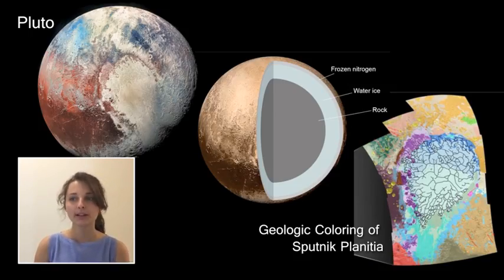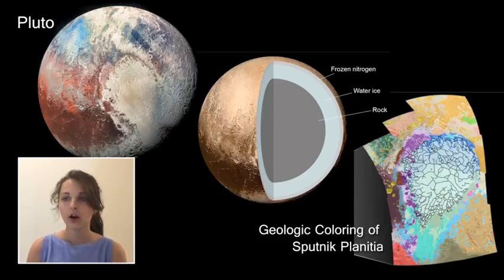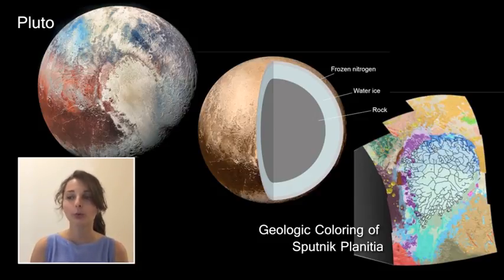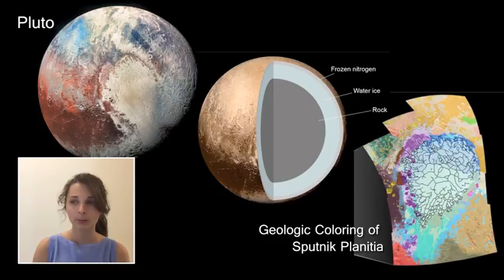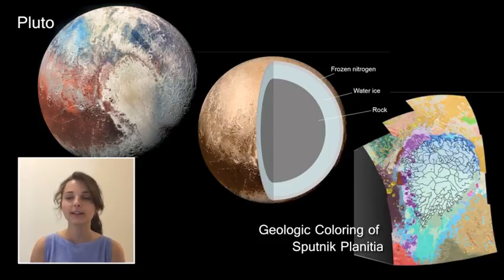Pluto is the dwarf planet that was classified as a planet until 2006, when the IAU changed its classification because one of the requirements to be a planet is that the object must have cleared its orbit of all objects of non-negligible mass. Pluto is the first dwarf planet discovered and its existence was actually predicted in the 19th century by Newtonian mechanics based on perturbations in Neptune's orbit. Pluto is in a 2:3 orbital resonance with Neptune and is tilted 120 degrees relative to its orbital plane, so it experiences extreme seasons — one quarter of Pluto is always in shade and one quarter is always exposed to the Sun.